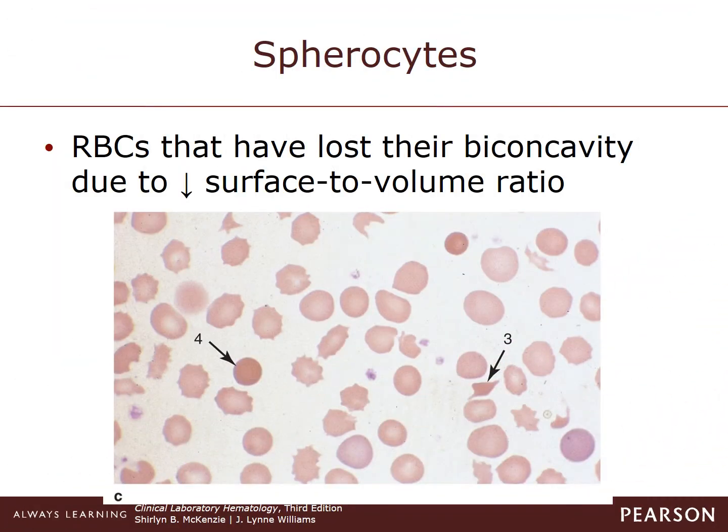Spherocytes, like in Image 4, are erythrocytes that have lost their biconcavity because of a decreased surface-to-volume ratio. On the stained smear, they appear densely stained, darker pink or red, lacking any kind of central pallor. Although the cell often appears microcytic, the cell volume is usually normal. The spherocyte is the only erythrocyte that can be called hyperchromic because it has an increased MCHC.